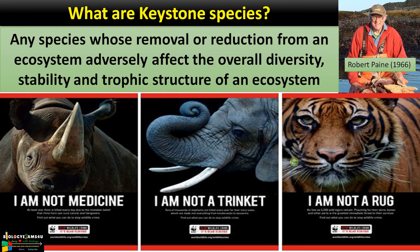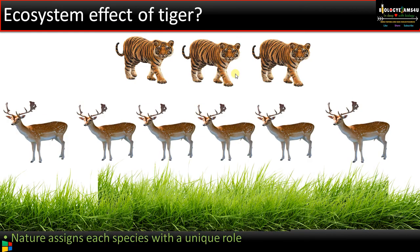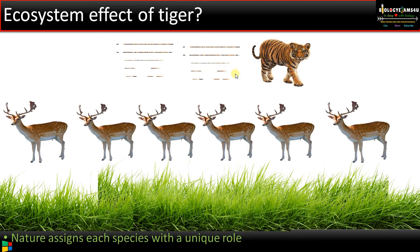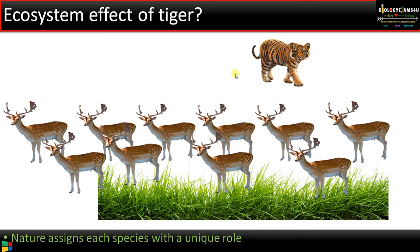Let us see how these species affect an ecosystem. Take the case of the tiger. As you can see in a food chain, grasses are the producers, grazed upon by the deer population, which is further preyed upon by the tiger population. Nature assigns each species a unique role in stabilizing the ecosystem. If the tiger population declines, normally the prey population increases, which ultimately causes a reduction at the producer level.